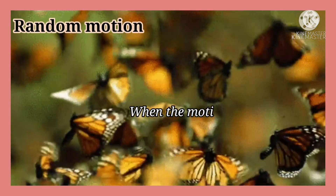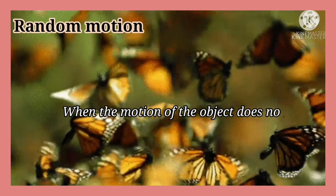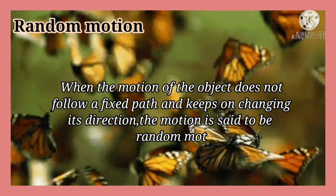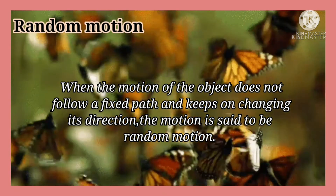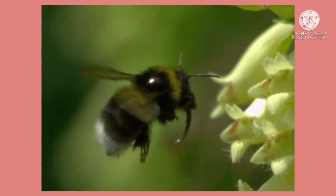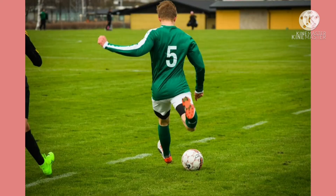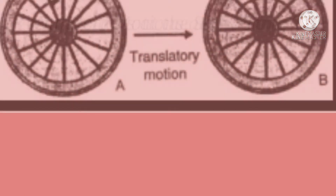Next, random motion. When the motion of an object does not follow a fixed path and keeps on changing its direction, the motion is said to be random motion. The motion of a flying bee, motion of an ant, and motion of a football player on the ground are some examples of random motion.